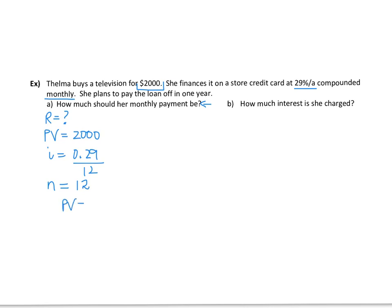So our present value is the $2,000. And our formula looks like this for present value. So let's fill in what we know and see if we can solve that. And then after you get that, you can figure out how much interest she's actually being charged for that television. How much extra is she paying is what the interest is.